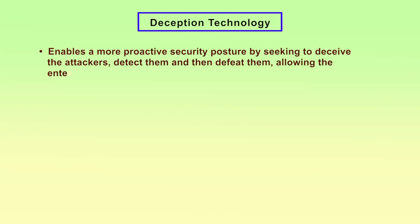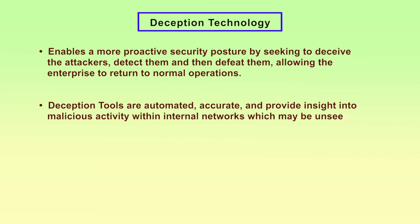The second emerging security technology is deception technology. It enables a more proactive security posture by seeking to deceive the attackers, detect them, and then defeat them, allowing the enterprise to return to normal operation. It is similar to a honeypot concept, where hackers are provoked to come in so their identity can be identified. The deception tools are automated, accurate, and provide insight into malicious activity within internal networks, which may be unseen by other types of cyber defense.